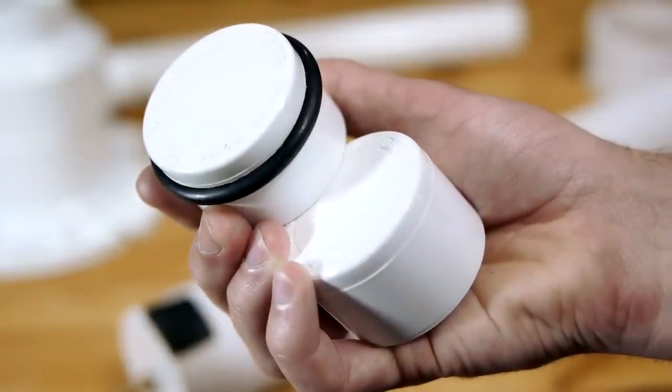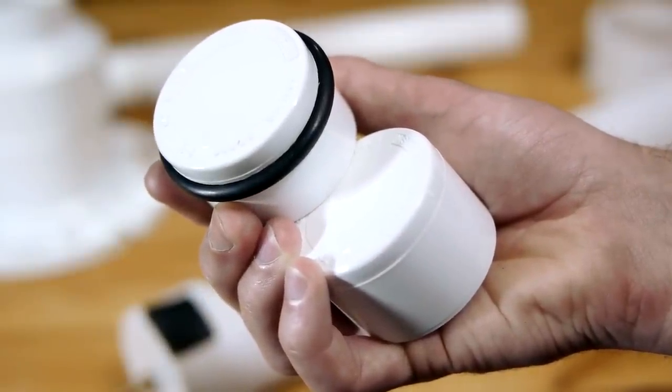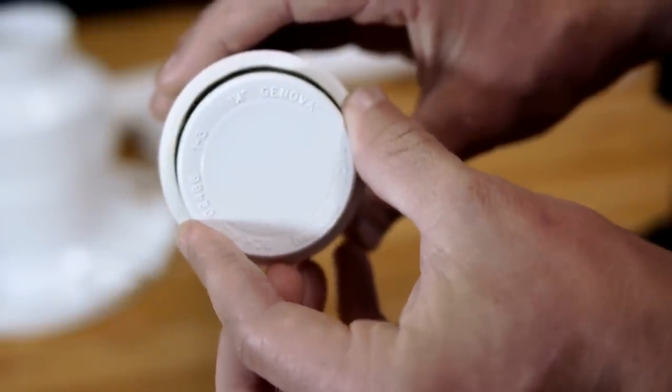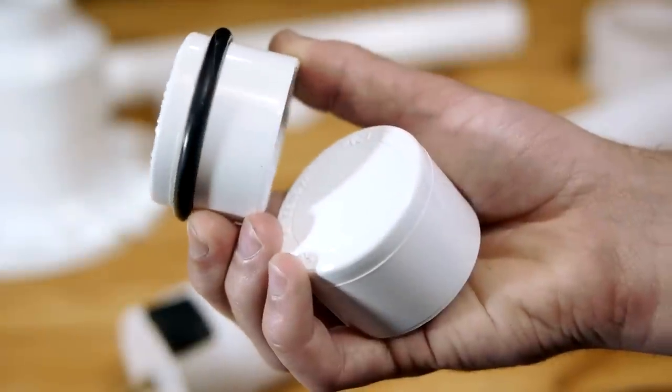To make the piston, I start with an inch and a quarter PVC end cap, which is already a close fit inside of the 2 inch PVC pipe, but to make it an airtight seal, the cap will need an o-ring installed.